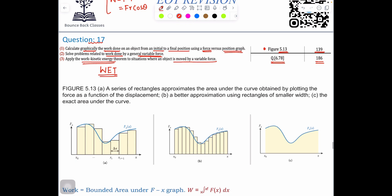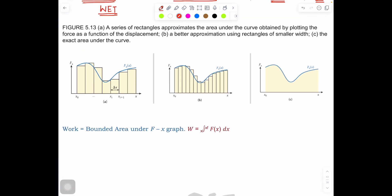Now let's move to the question. Figure 5.13 part A shows a series of rectangles approximating the area under the curve obtained by plotting the force as a function of displacement. What he's trying to tell us is that work done equals area under the curve. So we are looking for the area of F multiply r, or you can say area of y multiply x.